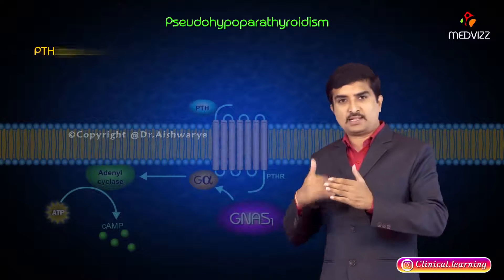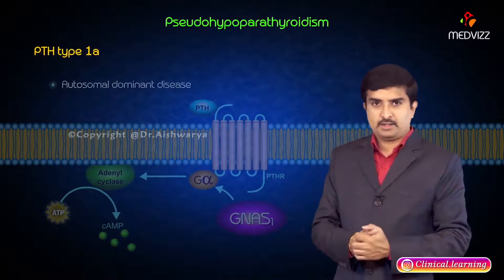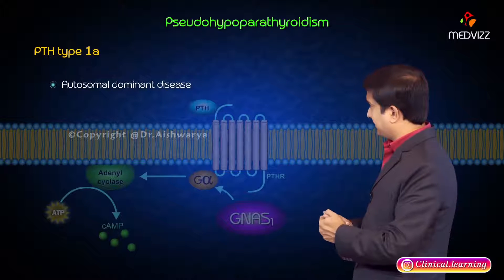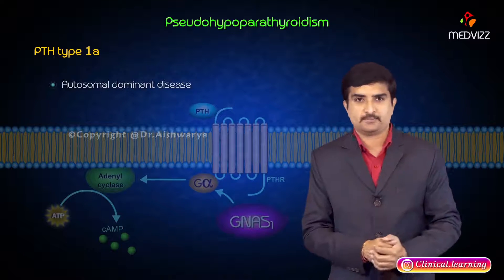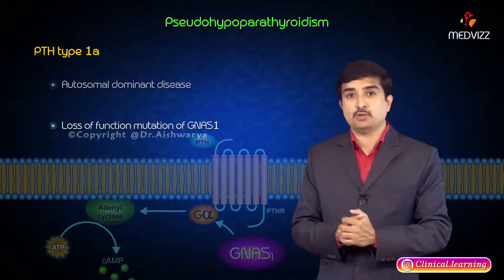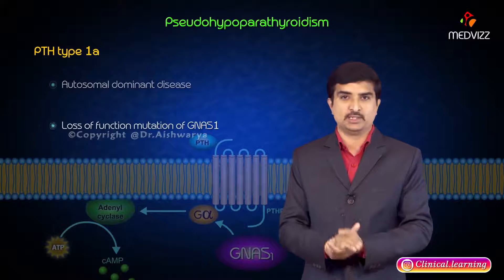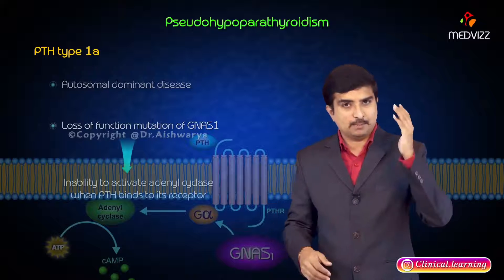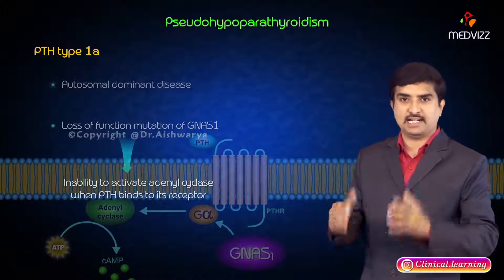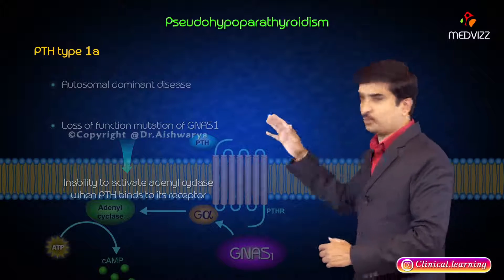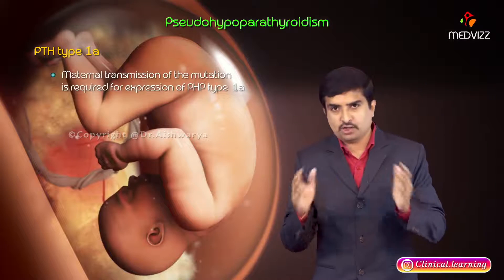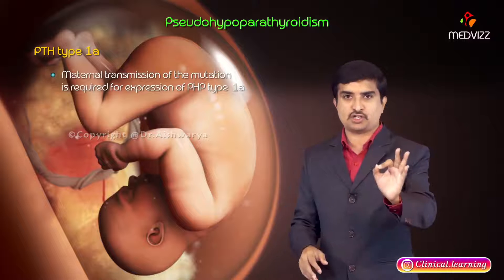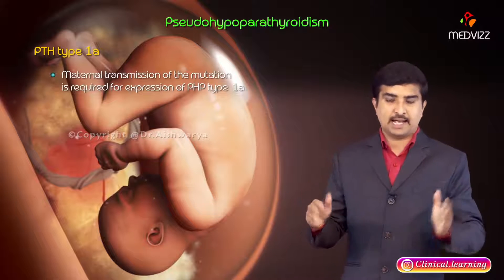Classifying type 1 further: PHP type 1a is an autosomal dominant disease with a loss-of-function mutation of GNAS1, leading to an inability to activate adenylate cyclase when PTH binds to its receptor. Maternal transmission of the mutation is required for the expression of PHP type 1a — this is very important to remember.